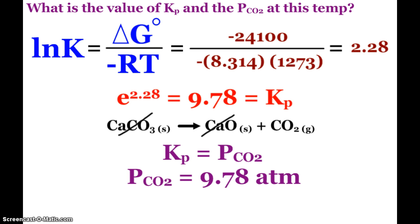So at this juncture, we see that Kp is equal to that pressure. So the pressure of my carbon dioxide is 9.78 atmospheres, 10 times greater than normal atmospheric pressure, where at 25 degrees Celsius, it was simply basically zero, 1 times 10 to the negative 23rd.